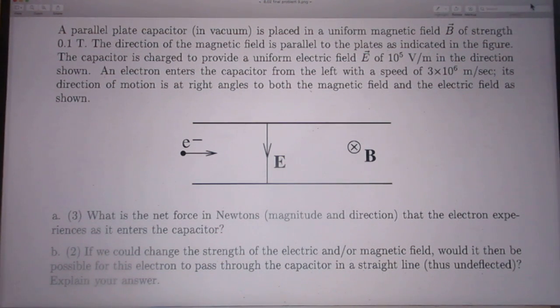The direction of the magnetic field is parallel to the plates as indicated in the figure. The cross means that it is inside the paper, not coming out of the paper, but it is inside the paper.